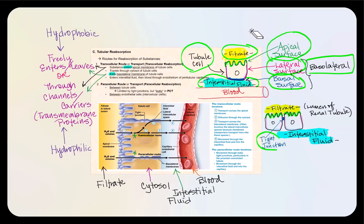A tight junction is what we find between these simple epithelial cells. The purpose of tight junctions is to prevent the filtrate — found in the lumen of the renal tubule — from passing in between the cells. In certain parts of the renal tubule, the tight junctions aren't so tight; instead, they're on the leaky side, which means it's possible for components in the filtrate to actually go in between the cells.